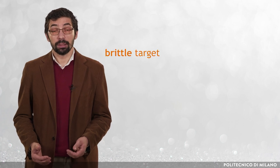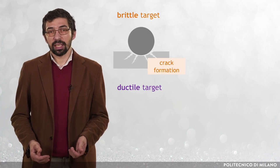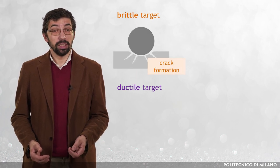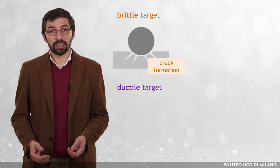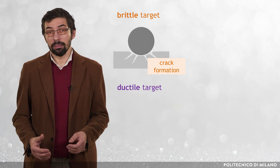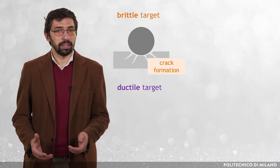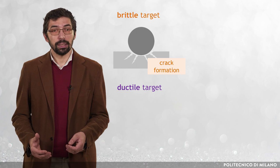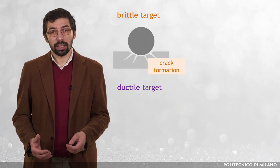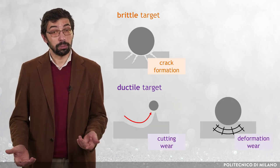Of utmost importance is whether the target surface has a brittle or a ductile behaviour. In the case of brittle materials, erosion is driven by crack formation. The collision between a particle and the brittle body causes lateral and radial cracks, which grow after subsequent impacts and finally cut the body into pieces which are washed out. The situation is more complex in the case of target material with ductile behaviour, when erosion is attributed to two physical mechanisms, namely cutting wear and deformation wear.